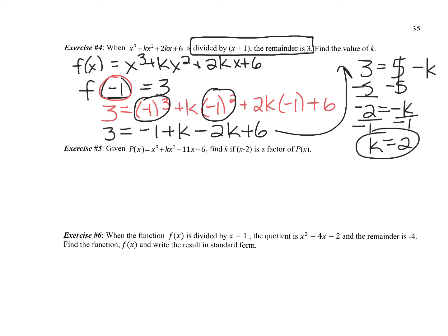So I could plug that number in, and my function, this is not what we have to do, we're just finding k, would be x cubed plus 2x squared plus 4x, when I did 2 times 2 or 2k, plus 6. And that would work, and we could check it on our calculator. If we check the function at negative 1, we would indeed see that the remainder is 3.